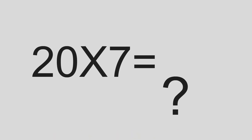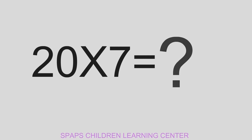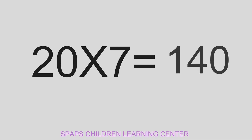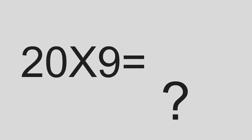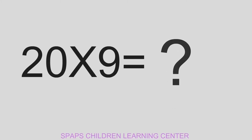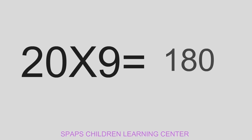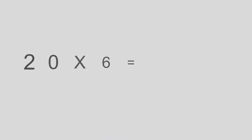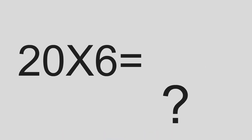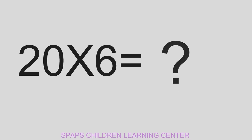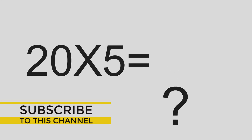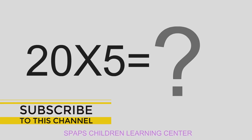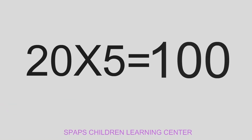20 times 7 equals... 140. 20 times 9 equals... 180. 20 times 6 equals... 120. 20 times 5 equals... 100.